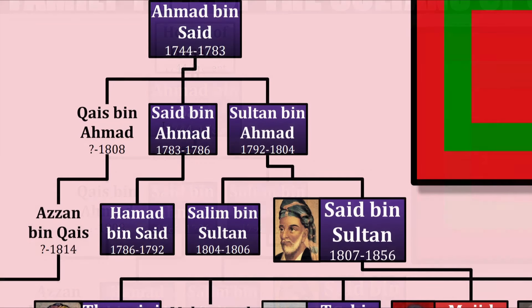Ahmad was succeeded by his son, Saeed bin Ahmad, in 1783 upon his death. Saeed's reign was a stark contrast to his father's. Even though none of his many brothers challenged the throne at first, bin Ahmad's reign would be plagued by it — multiple revolts led by his brothers to overthrow him, all of them unsuccessful. Eventually, bin Ahmad gave up most of his power to his son, Ahmad bin Saeed, in 1786, and remained Imam — now purely a religious title — in Rustak until his death in 1803.